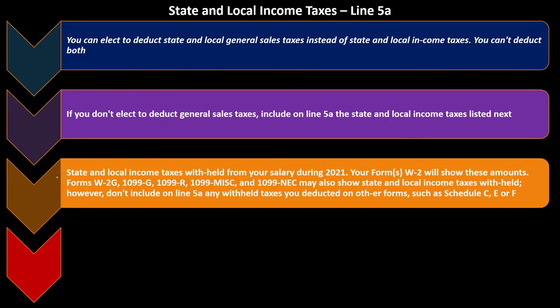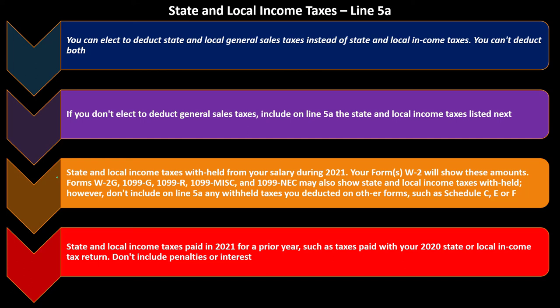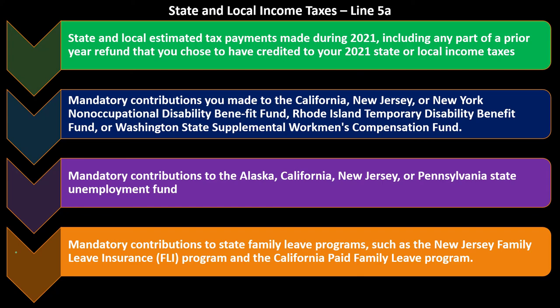State and local income taxes withheld from your salary during 2021 will be shown on your Forms W-2. Forms W-2G, 1099-G, 1099-R, 1099-Misc, and 1099-NEC may also show state and local income taxes withheld. However, don't include on line 5A any withheld taxes you already deducted on Schedule C, E, or F. Also, state and local income taxes paid in 2021 for a prior year — such as taxes paid with your 2020 state return — may be included, but don't include penalties and interest, as those are not deductible.